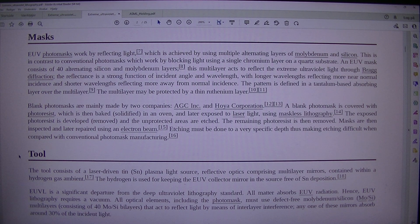All optical elements including the photomask must use defect-free molybdenum/silicon multilayers consisting of 40 Mo/Si bilayers that act to reflect light by means of interlayer interference. Any one of these mirrors absorb around 30 percent of the incident light.